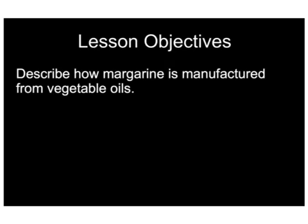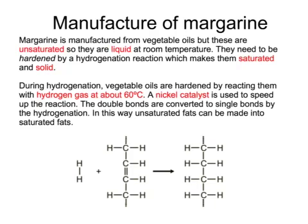Next, we're going to cover how margarine is manufactured. Margarine is manufactured using hydrogen gas and vegetable oils. The problem with vegetable oils used to make margarine is that they're liquid at room temperature, and margarine needs to be solid at room temperature. For this reason, vegetable oils are sometimes reacted with hydrogen gas. A nickel catalyst is used to speed up the reaction at a slightly raised temperature of 60 degrees. This reaction, which is called hydrogenation, adds a hydrogen molecule across the unsaturated double bond to make it saturated, so an unsaturated oil or fat can be made into a saturated oil or fat which is more likely to be solid at room temperature.